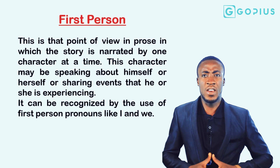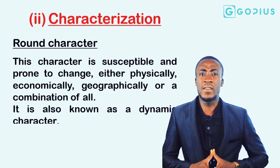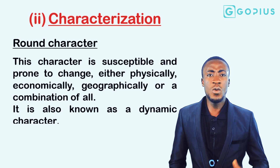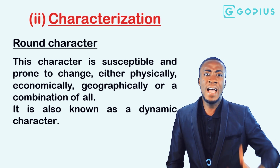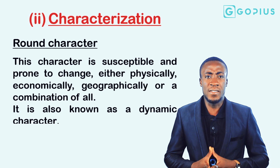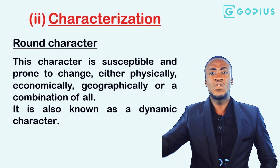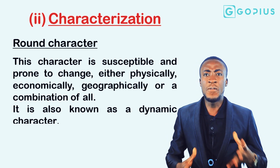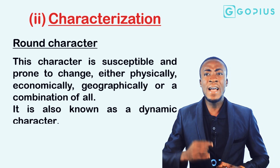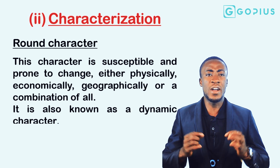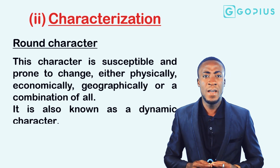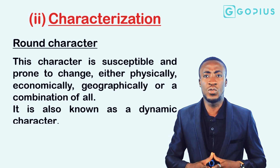Now the second aspect of techniques in prose is characterization. When we talk about characters, we are referring to the vehicles of action in every work of art — the people who enact the content of the plot. The first type is the round character. This character is susceptible and prone to change, either physically, economically, geographically, or a combination of all. A round character is also known as a dynamic character.